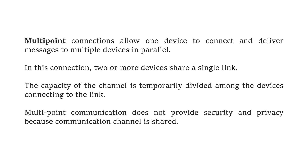Then, we can see what is a multipoint connection. This multipoint connection allows one device to connect and deliver messages to multiple devices in parallel. That is, in this connection, two or more devices share a single link. The capacity of the channel is temporarily divided among the devices connecting to the link, and this multipoint communication does not provide security and privacy because the communication channel is shared.